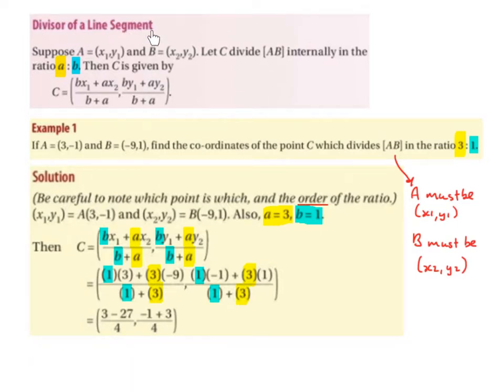Divisor of a line segment. Suppose that A is equal to (x1, y1) and B is equal to (x2, y2). Let C divide AB internally in the ratio a to b. Then C is given by C equals (bx1 + ax2)/(b + a), (by1 + ay2)/(b + a). This is the formula that we're going to use to work out this question.